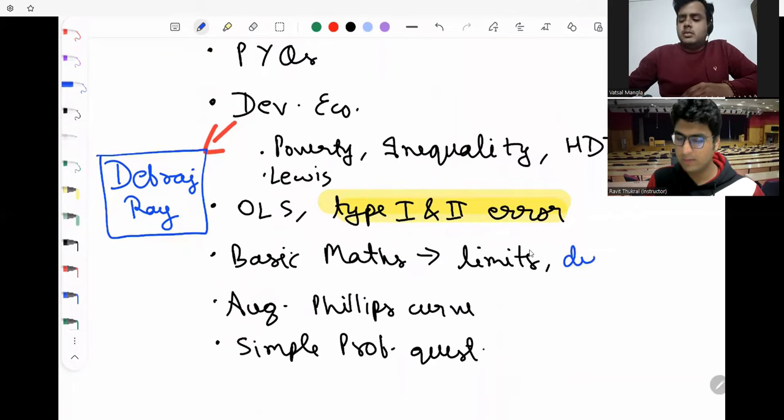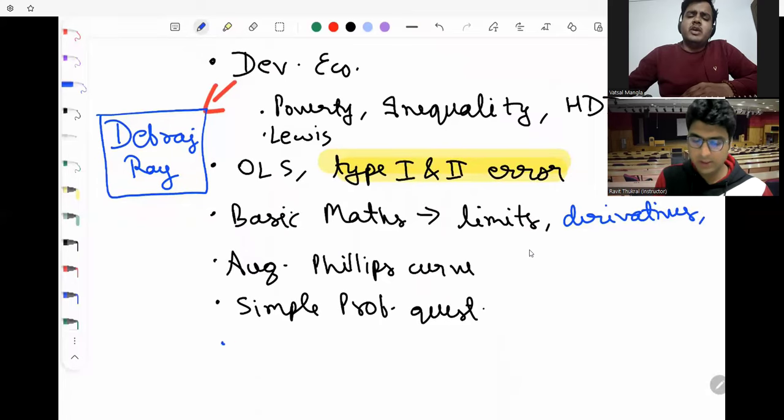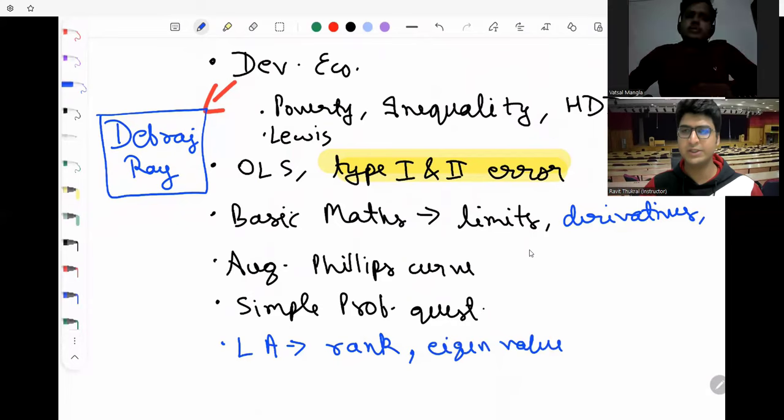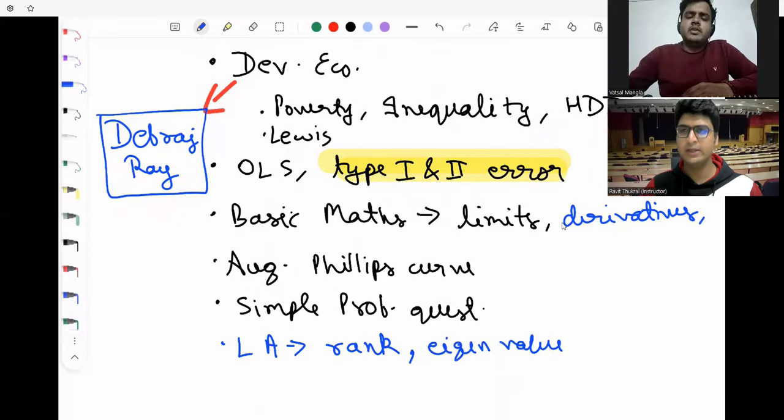Linear algebra was basic like eigenvalues, eigenvector. One question was related to eigenvalue. Under linear algebra, basic rank type questions, that's what I have seen in past years. Rank, eigenvalues, eigenvalue property-based things which you know directly about it.